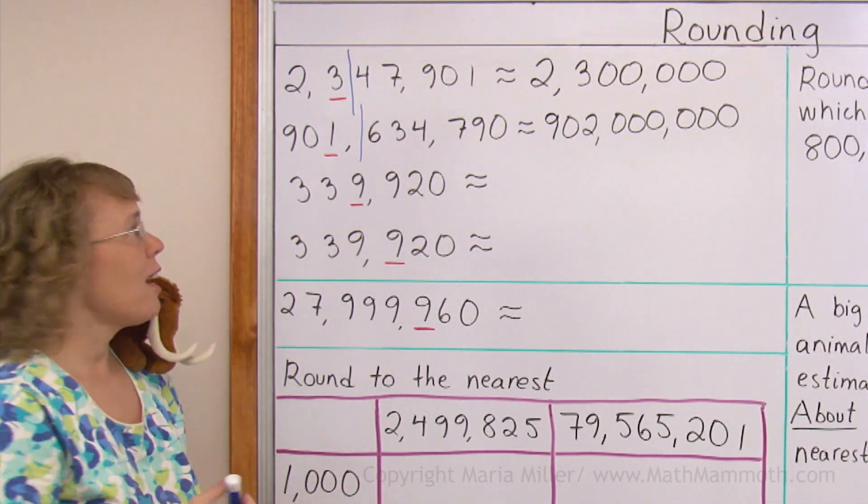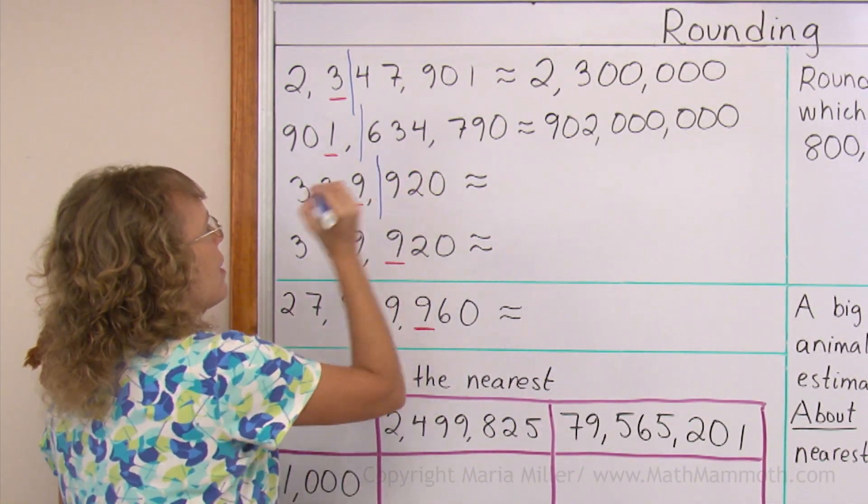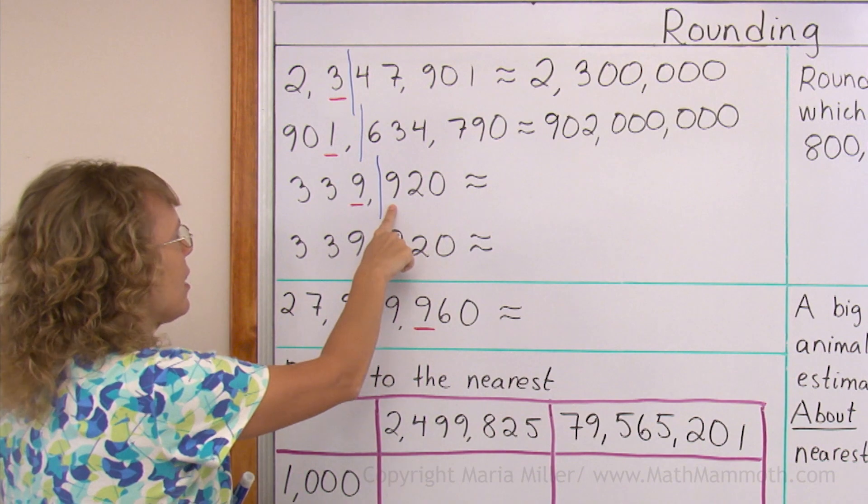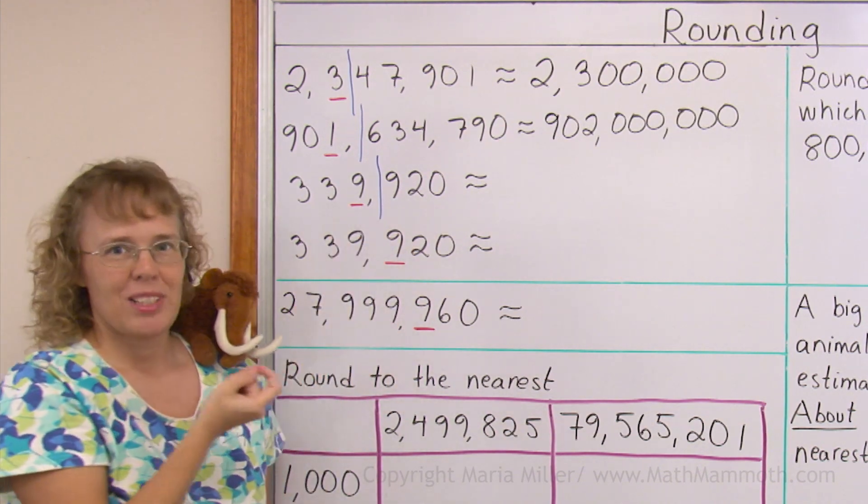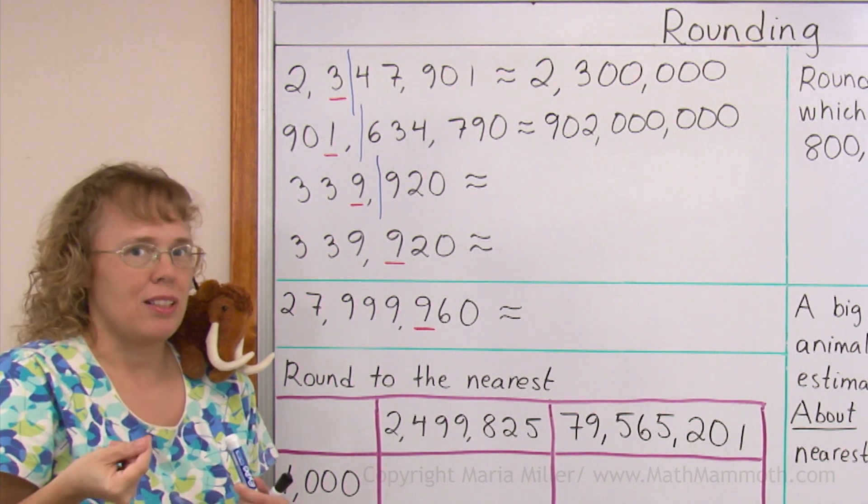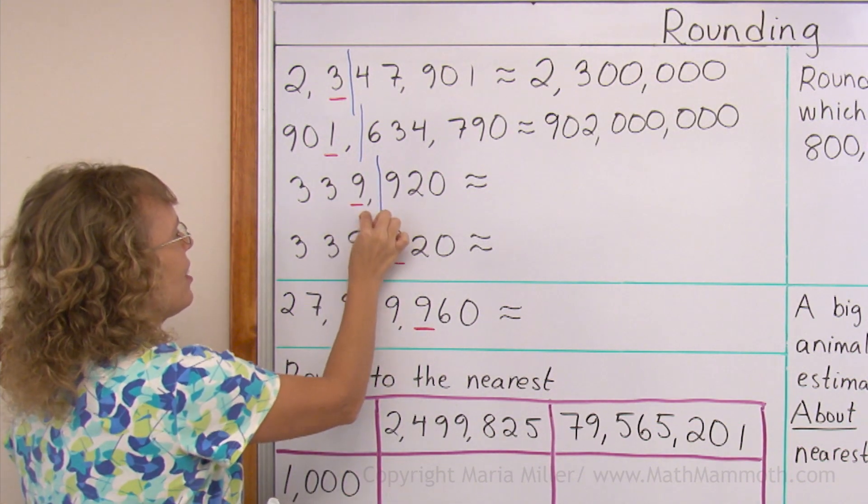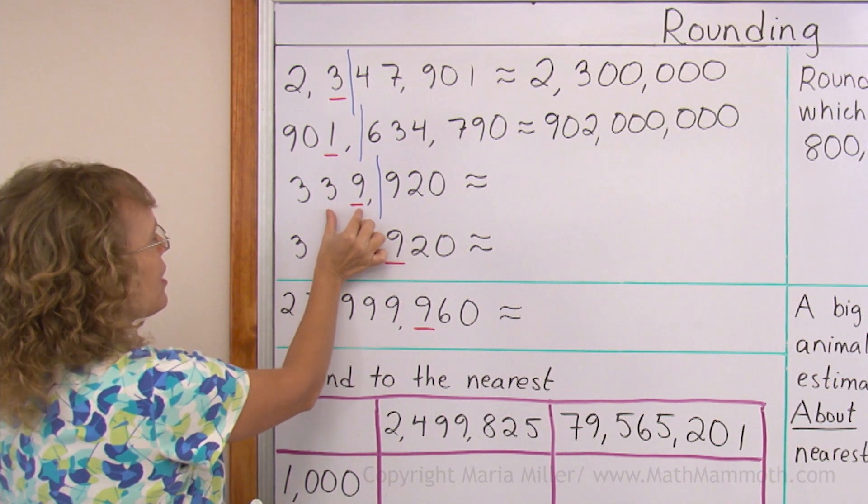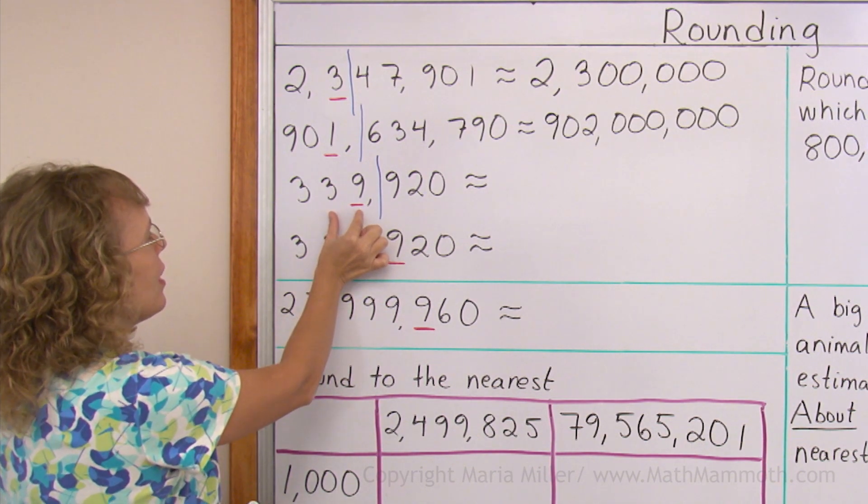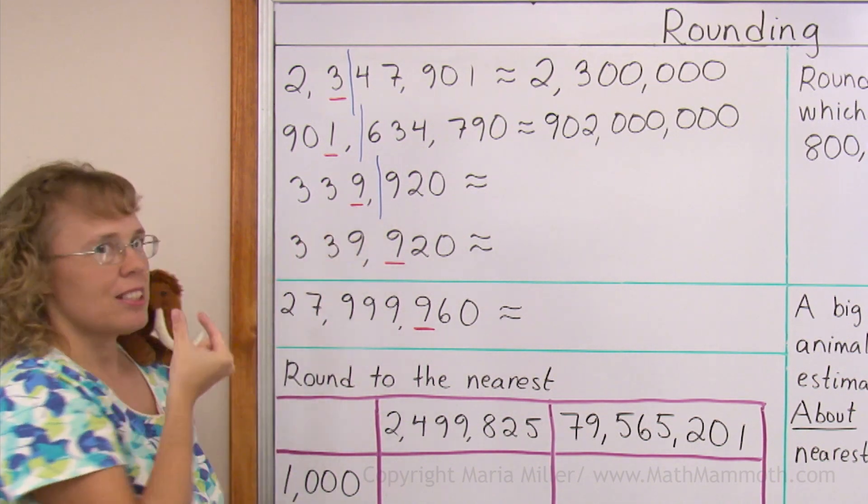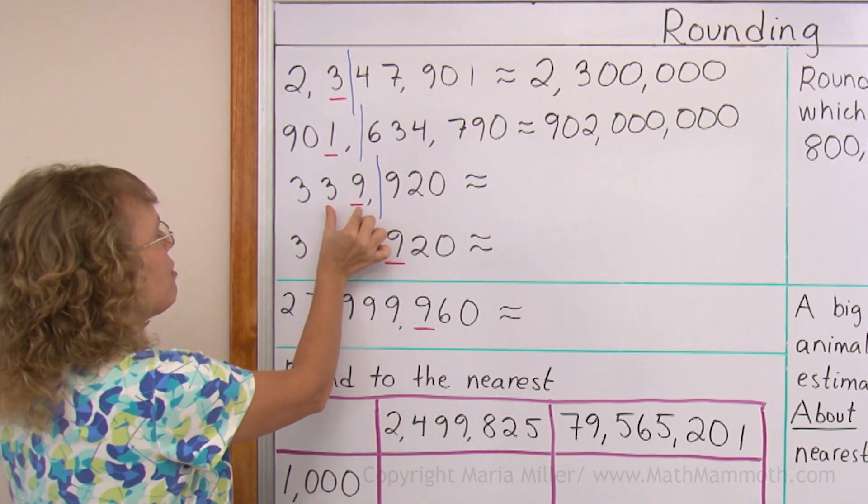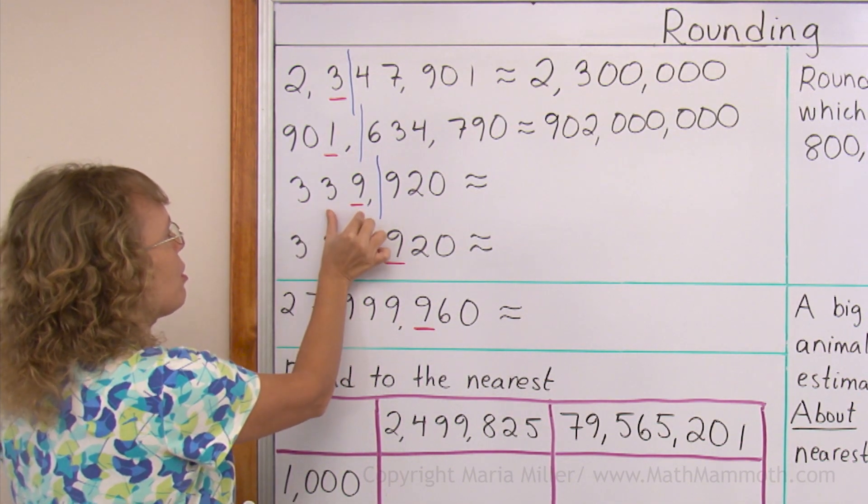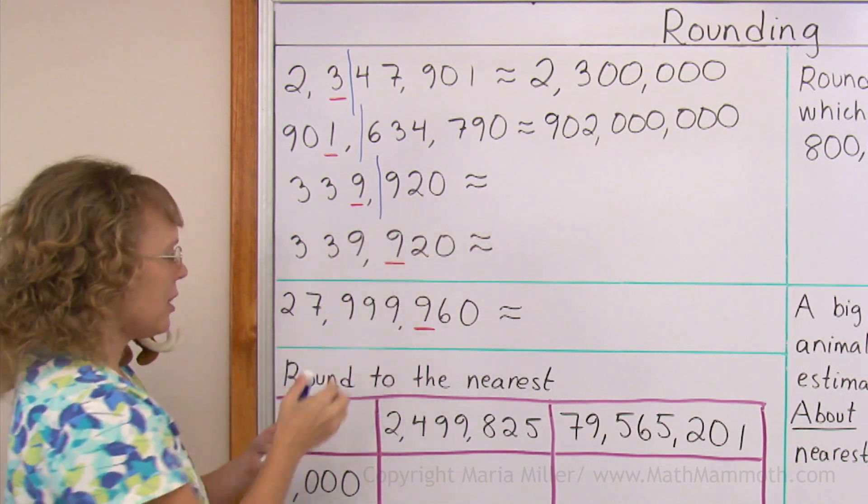Our next one has some nines. I look at this nine, it means I round up. But here is a nine. I cannot increase that by one. I cannot write 10 here in this place. But instead you can think of this 39 here, this 39,000 and increase that by one so it becomes 40. Instead of 39 here, we write 40. So we get 340 and 1,000. These become zeros once again.